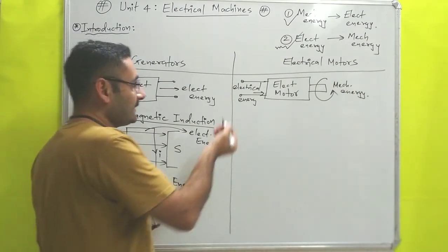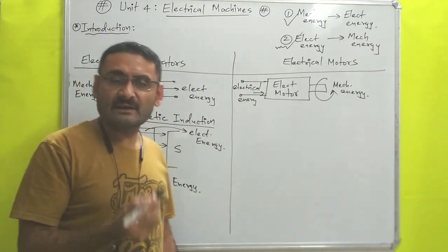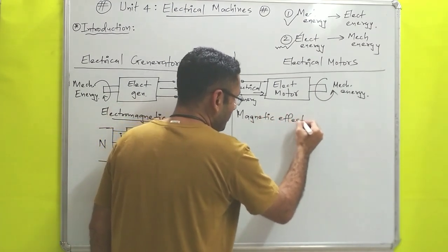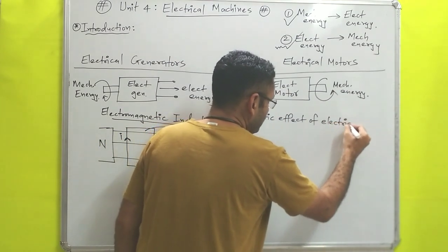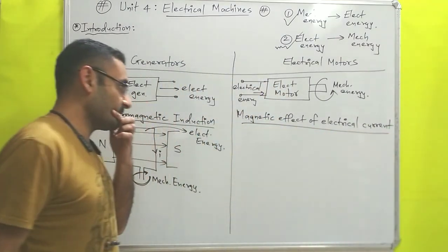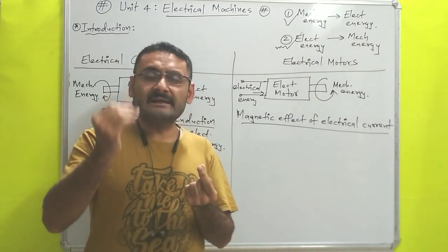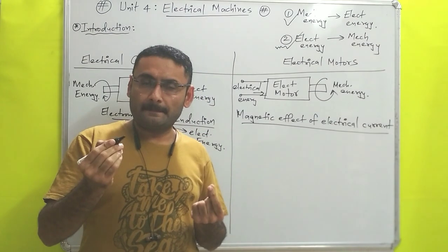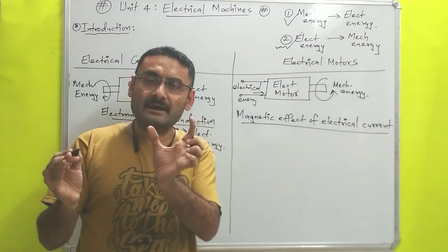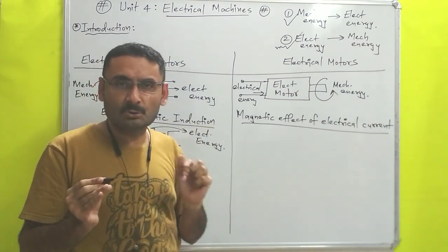A question arises again: how does an electric motor convert electrical energy into mechanical energy? For that purpose, one more principle is there, known as the magnetic effect of electric current. This principle says that whenever a current-carrying wire or current-carrying coil is placed inside a magnetic field, that wire will experience a force, and due to that force the coil will start to rotate.